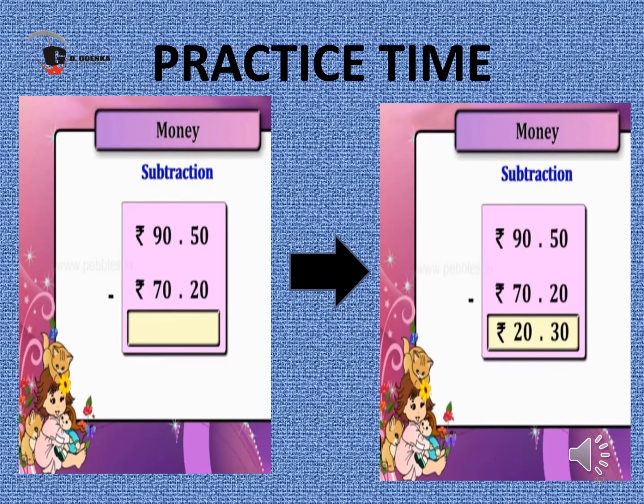The second subtraction example: subtract ₹70 and 20 paise from ₹90 and 50 paise. We write the numbers in separate columns and solve the paise column first: 50 paise minus 20 paise equals 30 paise. Then subtract the rupees column: 90 minus 70 equals ₹20. So our answer is ₹20 and 30 paise.